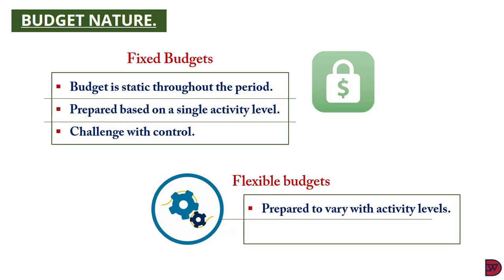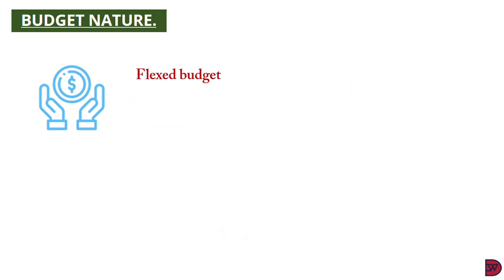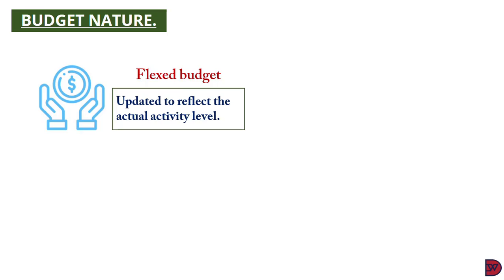The second is the flexible budget: each time there is a change in activity level, the budget is updated to capture that as implementation progresses. If at the beginning of the budget process the activity level is 20,000 for sales, and in the course of the period it moves to 30,000, a new budget will be prepared based on the new activity level. This ensures better control because the activity level in the budget and that of the actual outcome are the same. The next is the flex budget, which is updated to reflect the activity level in the actual outcome at the end of the year to ensure a meaningful control process.